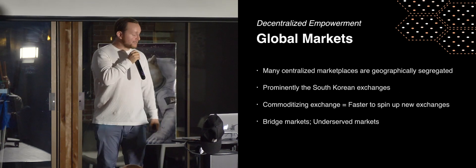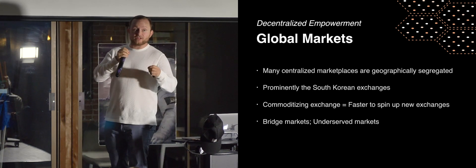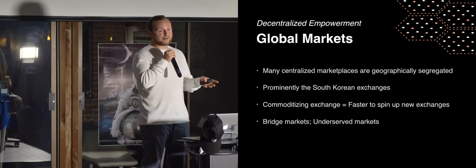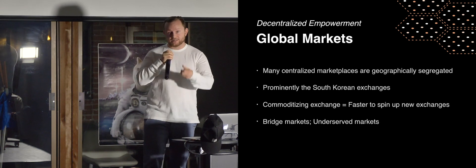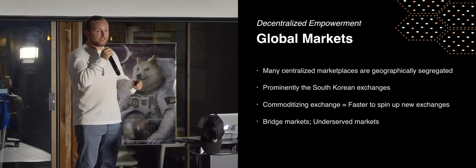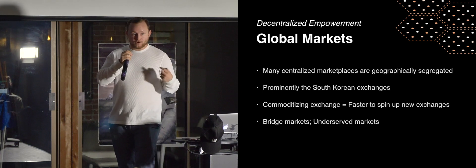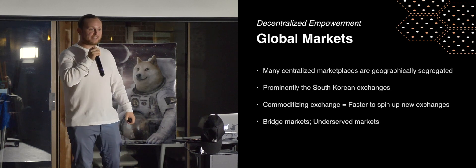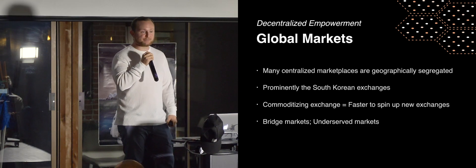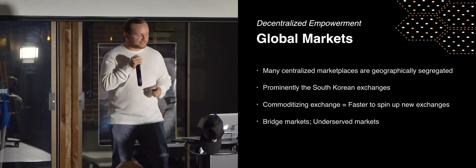Third, global markets. A lot of centralized marketplaces are segregated geographically. The one most people are familiar with: the South Korean exchanges. During the ICO craze of 2017, Bitcoin was trading 40% higher in South Korea than it was in the U.S., and we couldn't take advantage of that unless you had access to their traditional financial system. One way to resolve this would have been to spin up a DEX — which has very low overhead — peg the US dollar to a tethered token, peg the Korean won to a tethered token, and now you have complete access to that marketplace. By commoditizing exchanges, we're making it a lot faster to spin these up and access either existing markets that are currently segregated or new markets that are underserved.